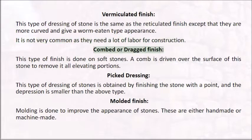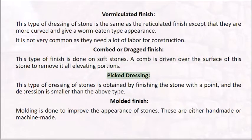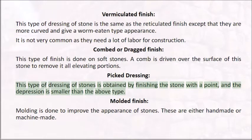Combed or Dragged Finish: this type of finish is done on soft stones; a comb is driven over the surface of the stone to remove all elevated portions. Picked Dressing: obtained by finishing the stone with a point, and the depression is smaller than the above type.